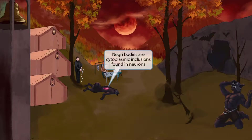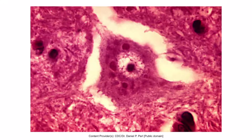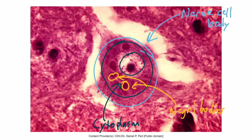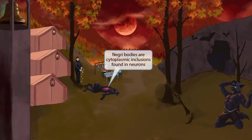Now look closely at the wounds that those silver bullets made — they have an interesting pattern much like a Negri body. This histological image shows a Negri body in a nerve cell body. You can see the cytoplasm, and the Negri bodies are these eosinophilic inclusions. Negri bodies are cytoplasmic inclusions found in the neuron cell body.